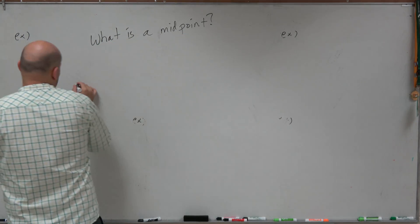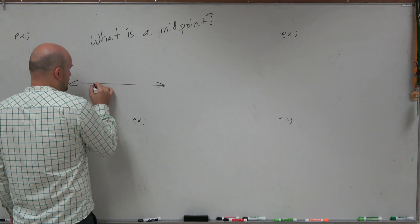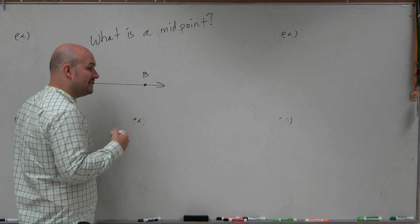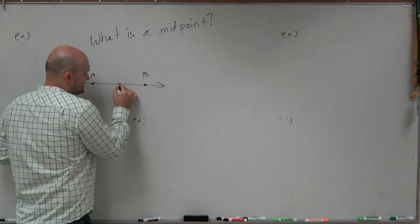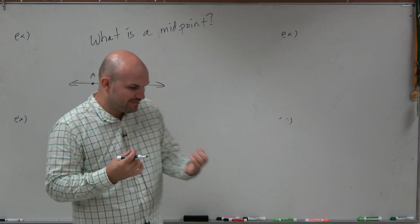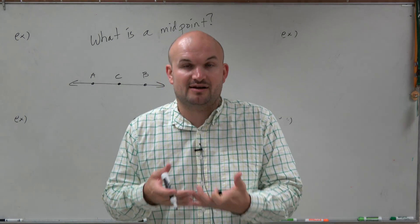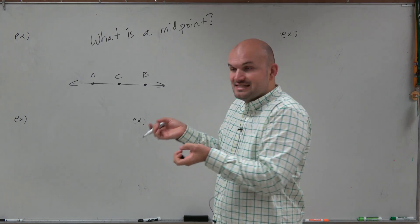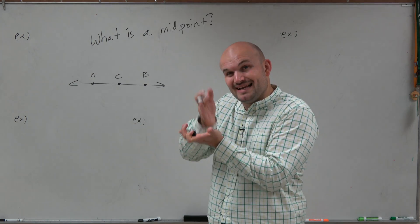The first way we're going to look at this is on a number line. So if we have two points, let's just call them A and B, then our midpoint between A and B is going to be right in the middle. This is very important, and I wanted to make this video for this reason: the midpoint is very special because it cuts the distance of A and B in half. It's right in the middle.